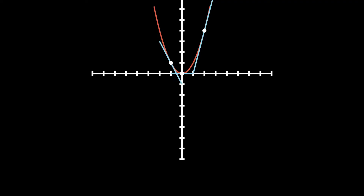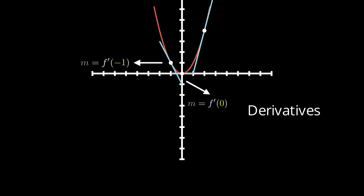This is where the derivative comes in. The derivative is basically an equation that allows you to calculate what the slope is of a function at any point. So if you wanted to find the slope here, or here, or here, you can use the derivative equation to find what that value is.